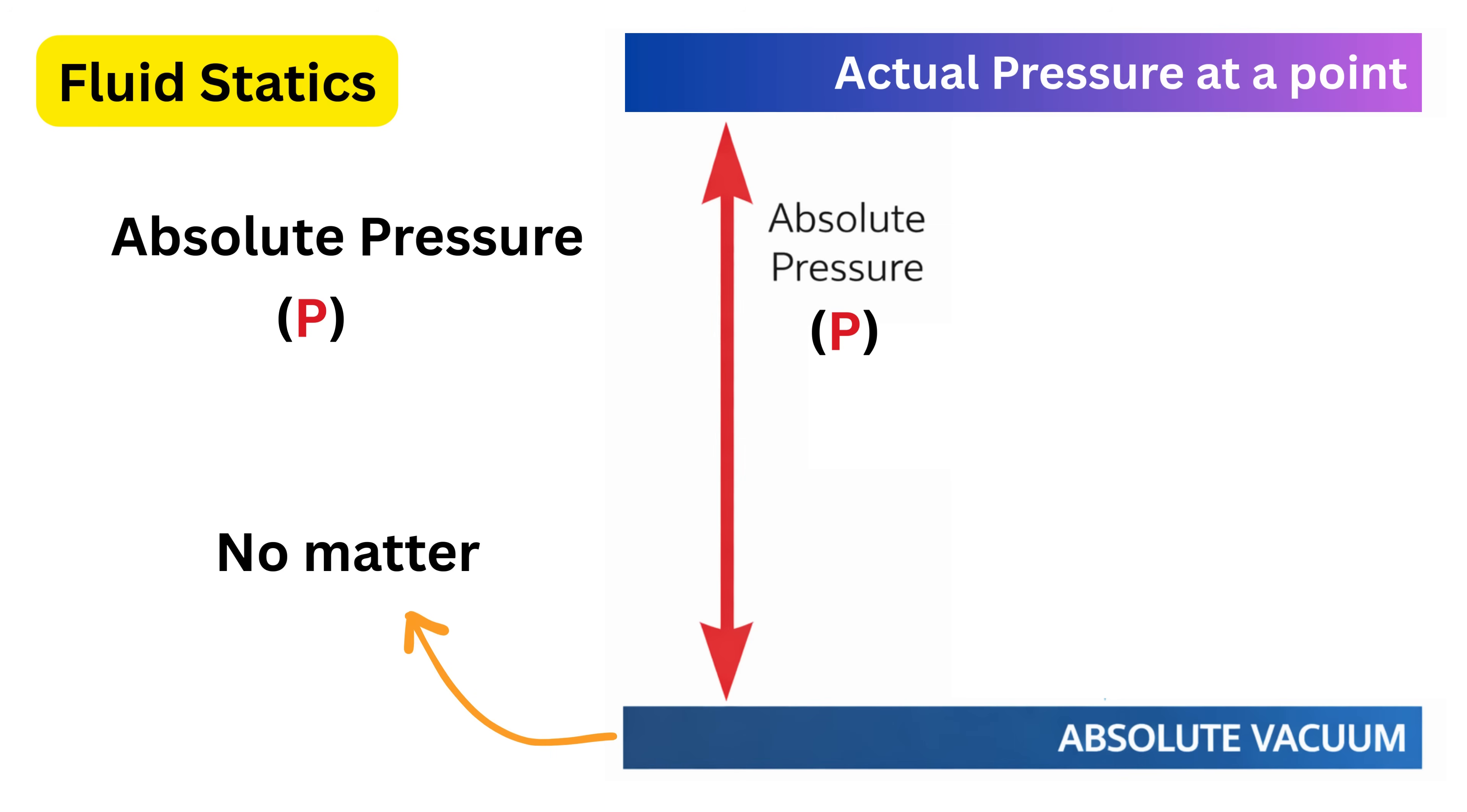Vacuum means complete absence of matter and pressure. So the pressure in a vacuum is zero and therefore absolute pressure represents the true total pressure at that point. Atmospheric pressure is an absolute pressure. This is because the atmospheric pressure is measured with respect to a perfect vacuum as the reference and not relative to any other surrounding pressure.